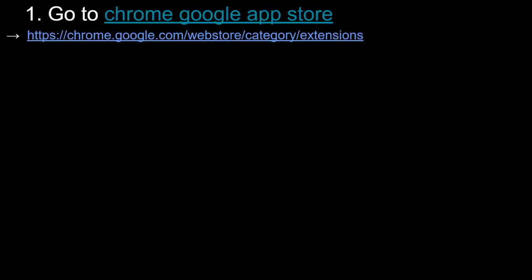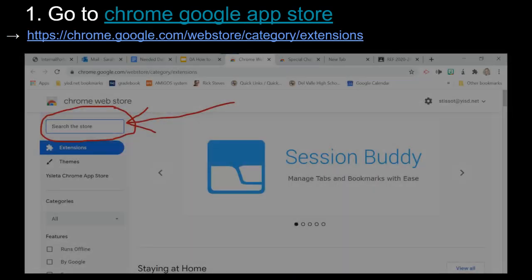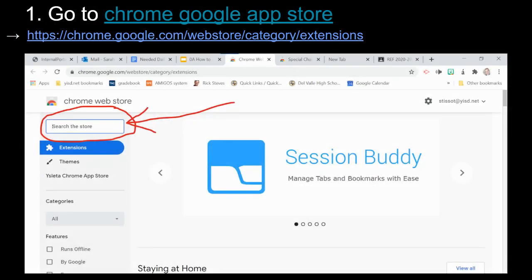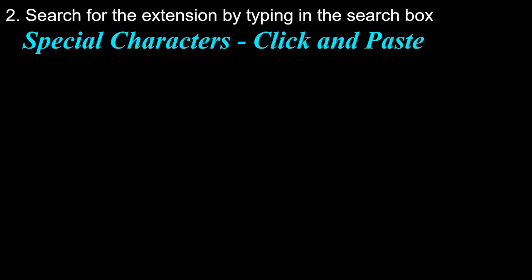The first thing you want to do is go to the Chrome Web Store to add an extension. This is not an active link in the video, so you need to type it in yourself — just type in 'Chrome Web Store' and you should get there.